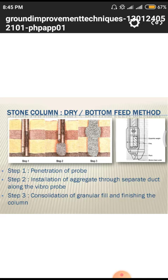Different aggregate sizes are used in the bottom itself; there is some expansion at the bottom to create friction and a larger contact area with the column. Different shapes are given at the bottom to improve attachment.